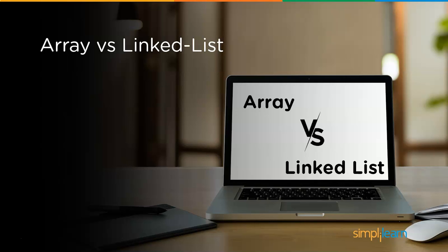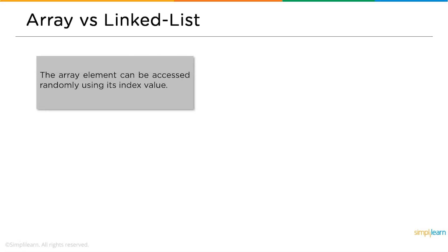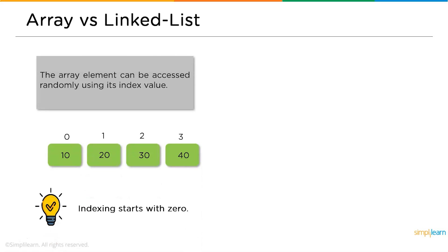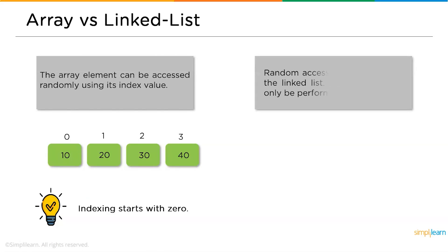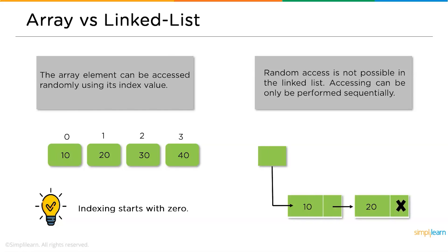Now let's look at the fundamental differences between arrays and linked lists. The first difference: array elements can be accessed randomly using just the index value. However, random access is not possible in a linked list — to access any element, you must traverse the nodes sequentially.